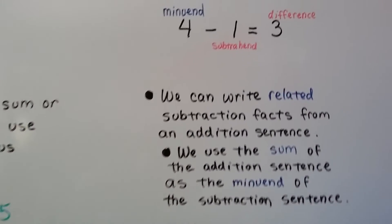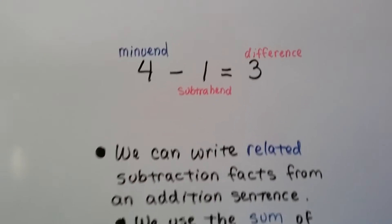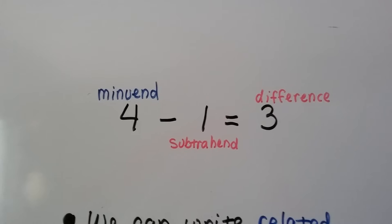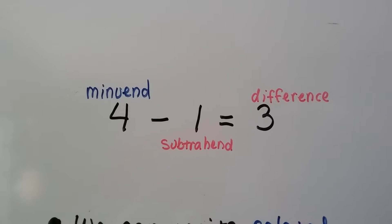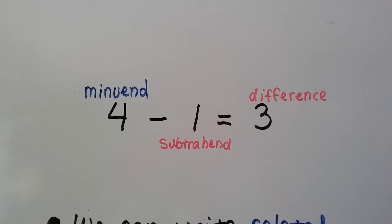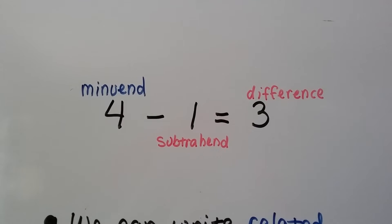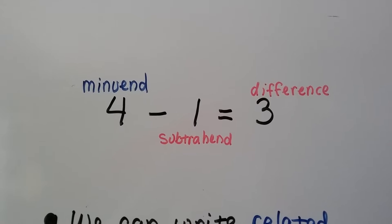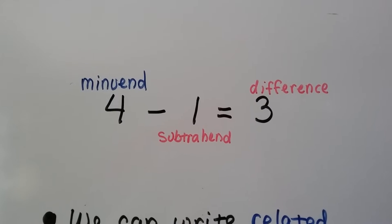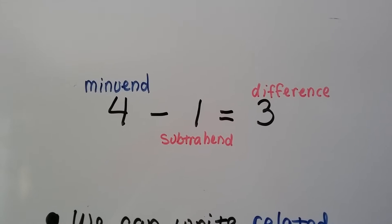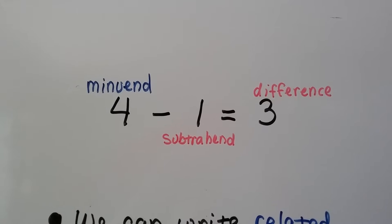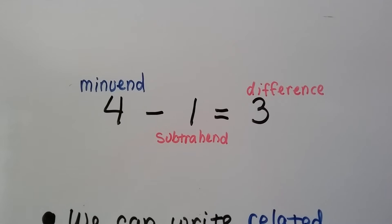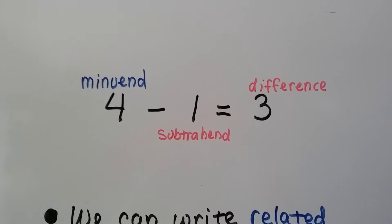Now, if you remember, we talked about before that this first number is the minuend. In this number sentence the four is the minuend. The one is the subtrahend — it's the amount being taken away from the four. And the three is the difference.